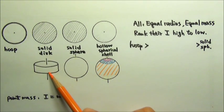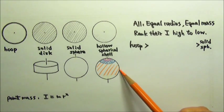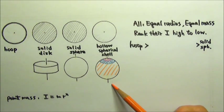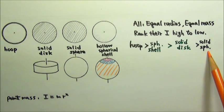So compared to the solid disk, the spherical shell has a bigger fraction of its mass far from the axis. So the spherical shell is second, then the solid disk, then the solid sphere.